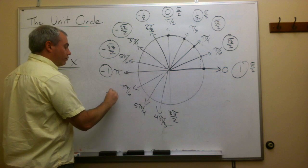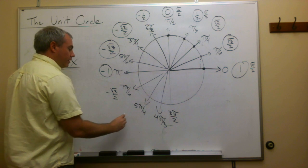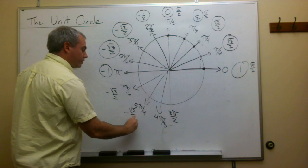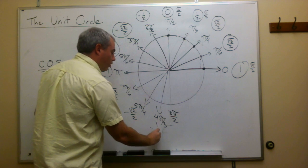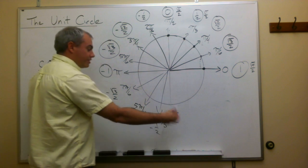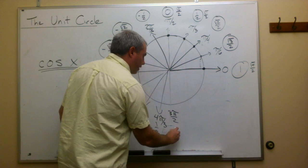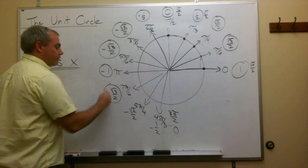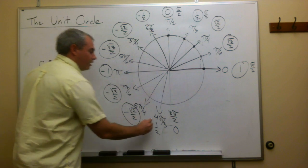So this is negative root 3 over 2. This is negative root 2 over 2. This is negative 1 over 2. And this is negative root 0 over 2, or otherwise known as 0. So here are the cosine values of these angles.